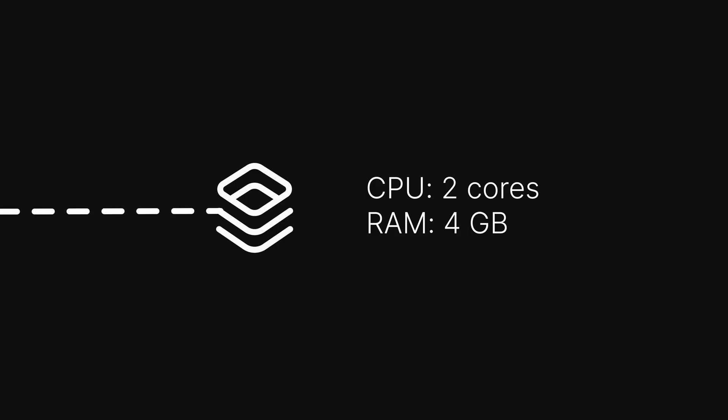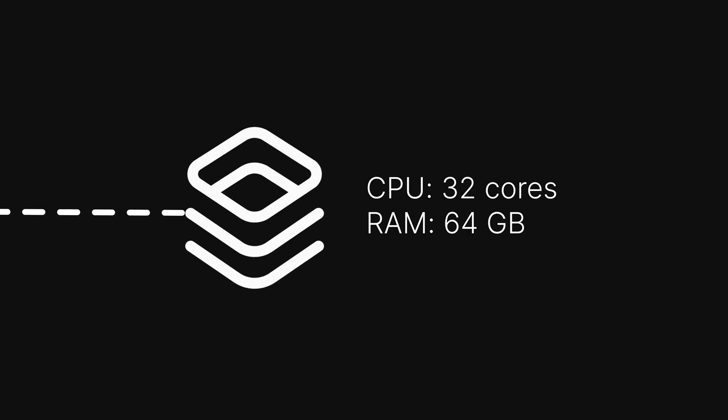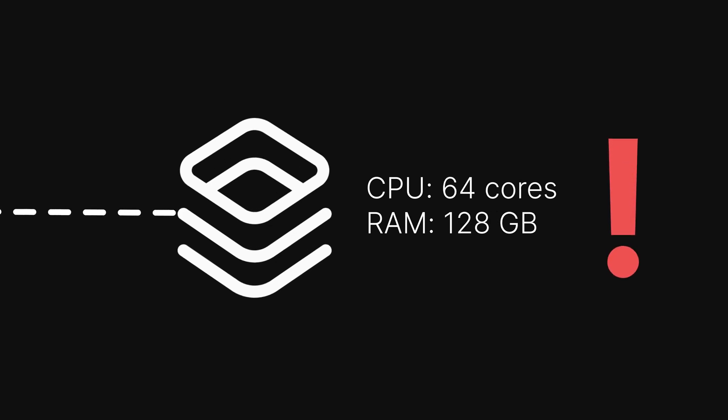As your application starts to grow and more users discover you, you're going to start to get more load on your database. What you can do at this point is simple vertical scaling, which basically means bumping up to a machine that has more CPU, more RAM, more storage, better network bandwidth capabilities, and keep bumping this up as user demand increases.